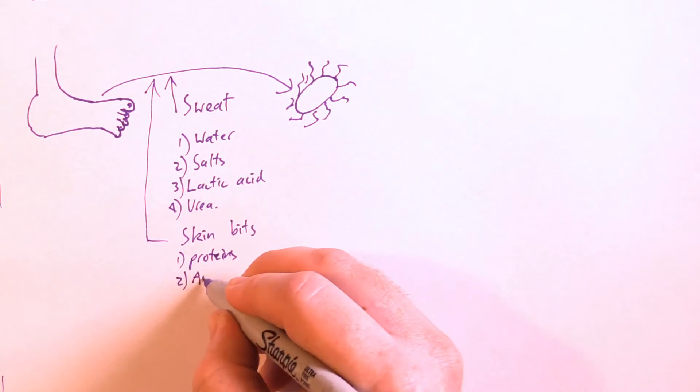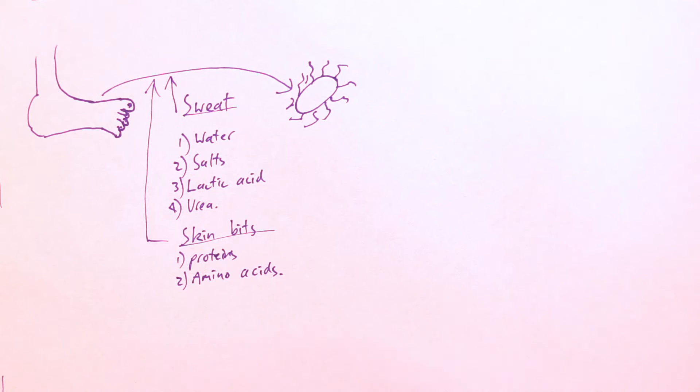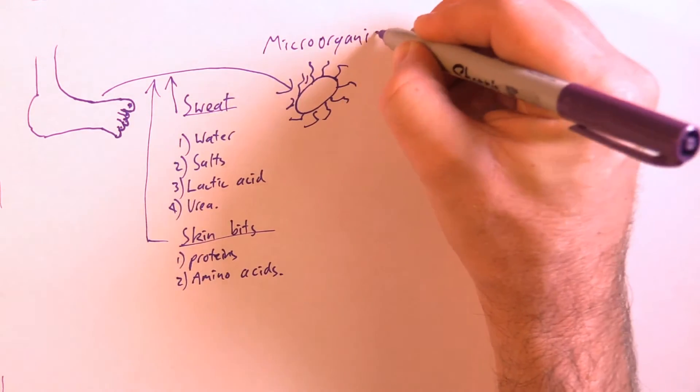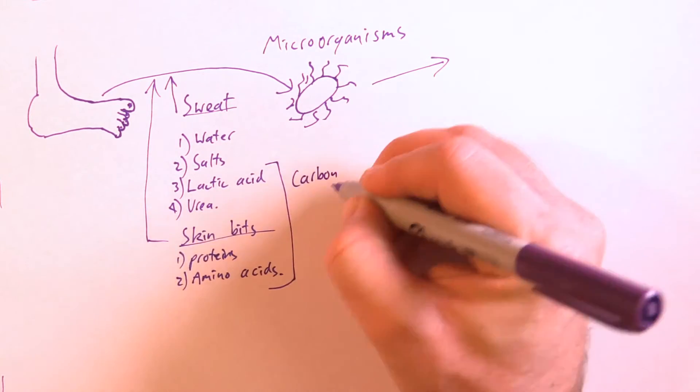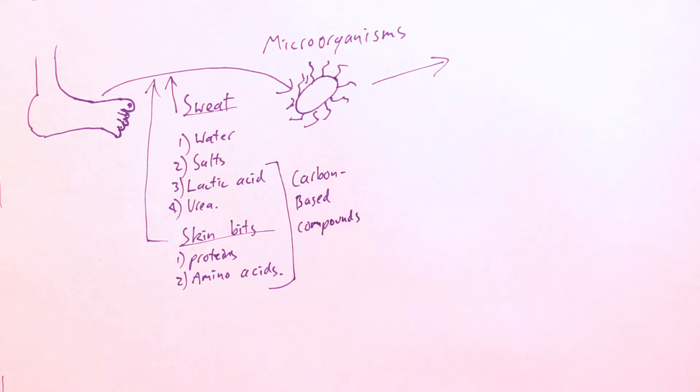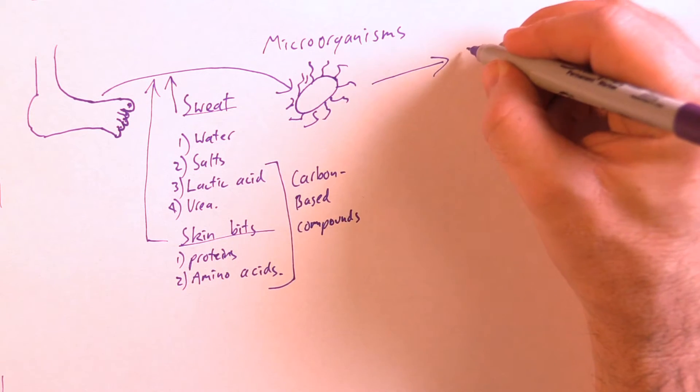Ultimately, all these form a mixture of carbon-based compounds. So these carbon-based compounds then get metabolized by microorganisms. The metabolic products of these microorganisms are small carbon-based compounds, and this is what forms the actual smell.